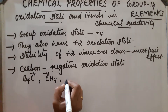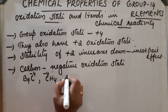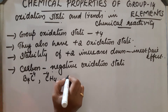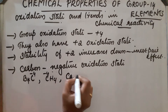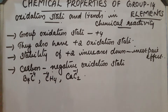Another example is calcium carbide, where carbon has a minus 1 oxidation state. These are some of the examples of carbon's negative oxidation states.